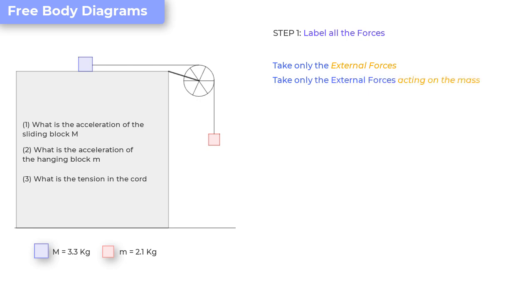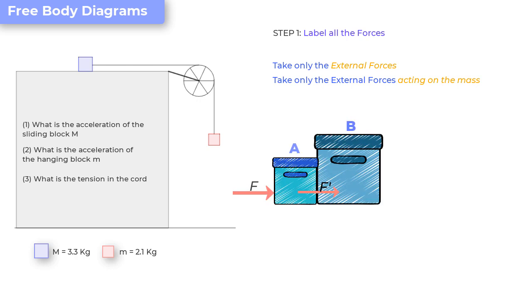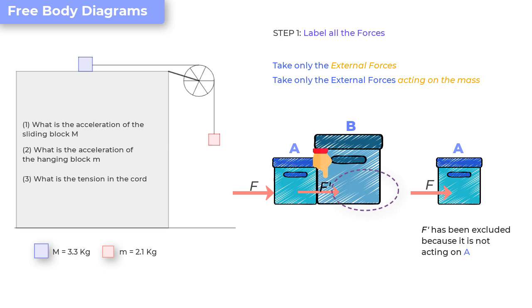As an example, take the setup and you're told that box A is pushing against box B with a force F dash. And you're asked to make a free body diagram of box A. Then it would look like this. You see, we have considered only the forces acting on box A. And F dash has been excluded from it because it is not a force acting on A.